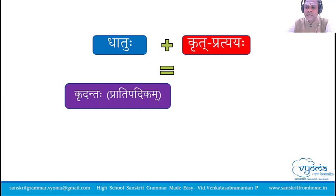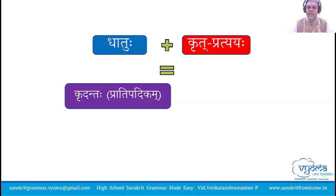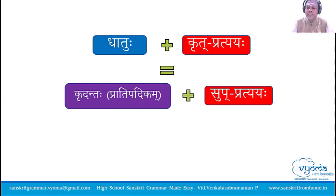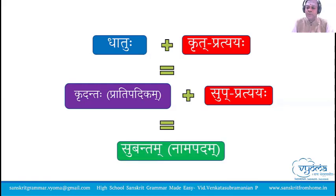These kridantas are namapadas. After the addition of krita pratyayas, they become pratipadika. The meaning of pratipadika is the root form of a noun. What essentially happens is, when a set of krita pratyayas is added to the dhatu, it gets converted to the root form of a noun. When it becomes the root form of a noun, we can add the pratyayas related to noun forms and we get a subanta or a namapada.